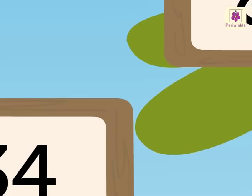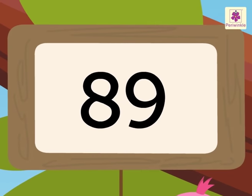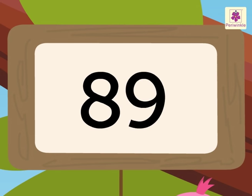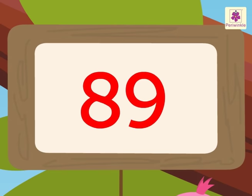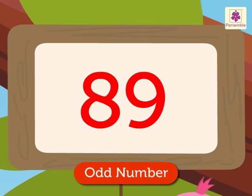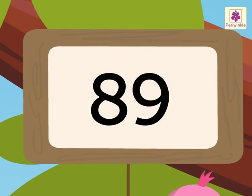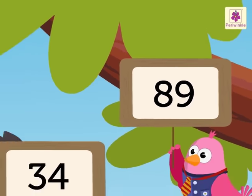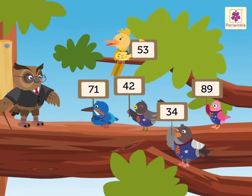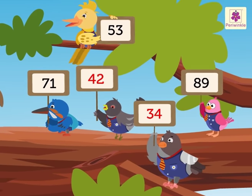And the last number is 89. Here, the number 9 is in the ones place, so 89 is an odd number. Well done! We have found 2 even numbers and 3 odd numbers.